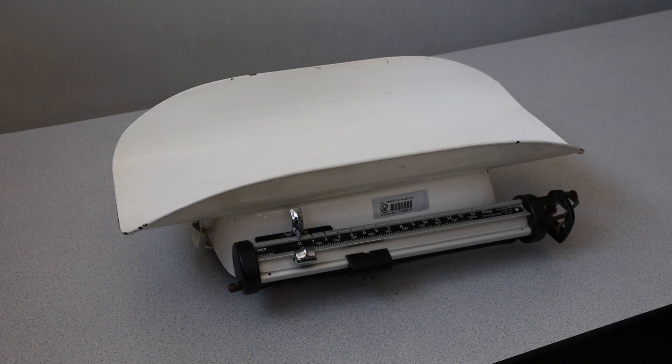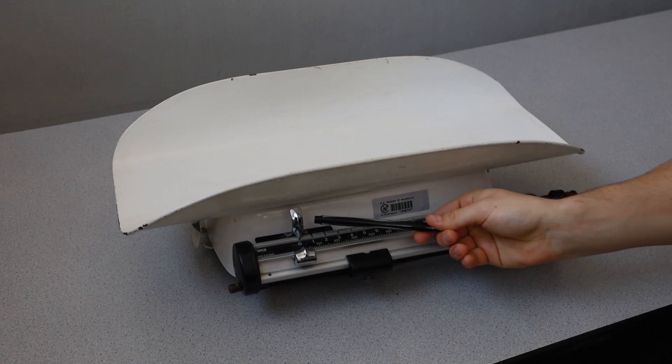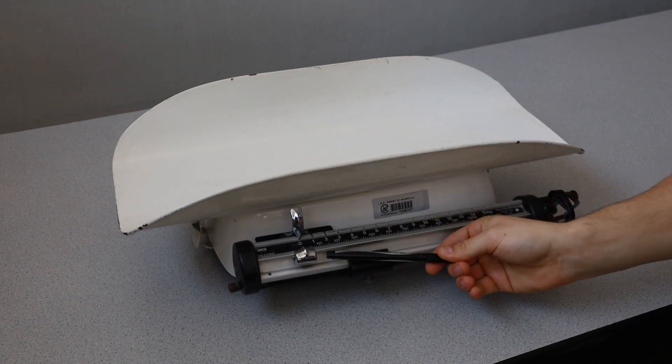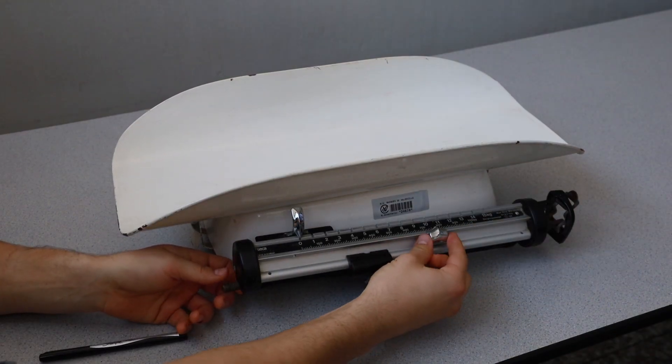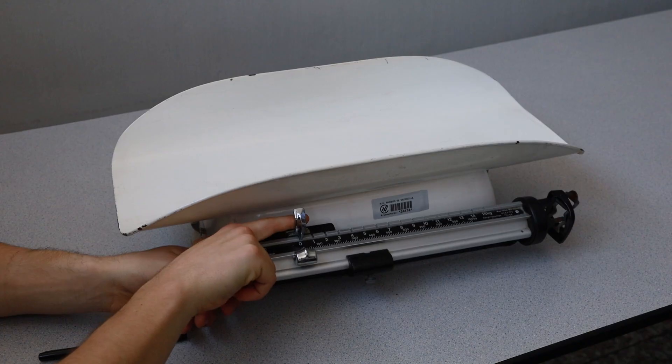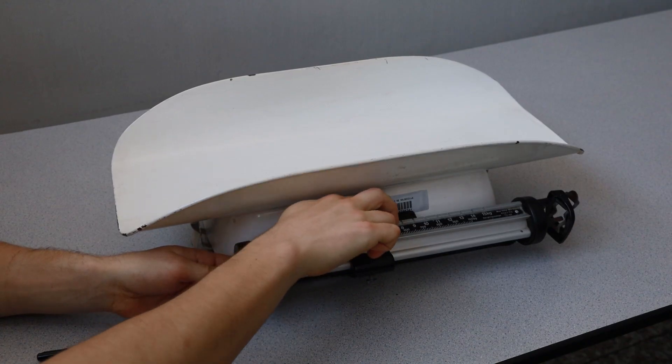Most infant scales will have two known weights that are used for performing a weighing: the large sliding weight and the small sliding weight. Both of these weights are able to slide along a metal beam in order to adjust the level of the beam balance.